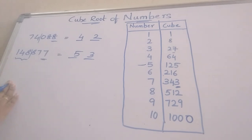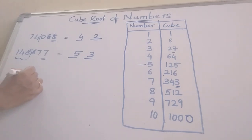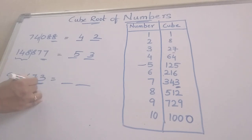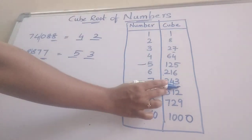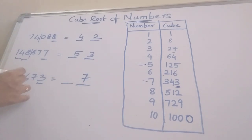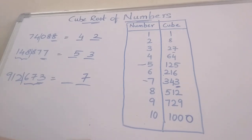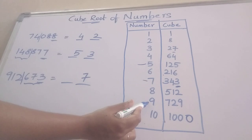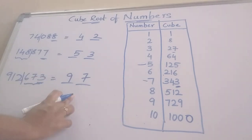Now we can find the cube root of one more number: 912673. First, the last digit is 3. Where is 3 in the table? That is 343, so write 7 directly. We omit the last 3 digits and take 912. 912 lies between 729 and 1000. We write the smaller number, which is 9. The answer is 97.